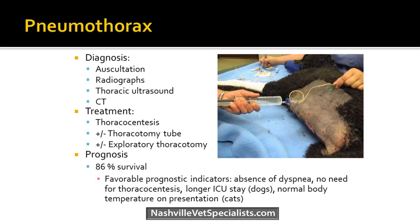Treatment is thoracocentesis — same concept as for fluid, just aim higher for air. The pet can be in lateral for this procedure. A thoracostomy tube is indicated if you're having to do more than three or four intermittent thoracocentesis. Exploratory thoracotomy for spontaneous pneumo would also require a chest tube. The overall prognosis is pretty good — about 86% survive. Favorable prognostic indicators include absence of dyspnea, not needing to tap the chest, a longer ICU stay in dogs, and normal body temperature on presentation in cats.